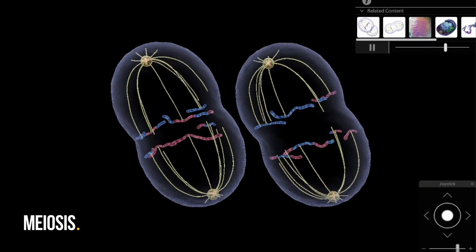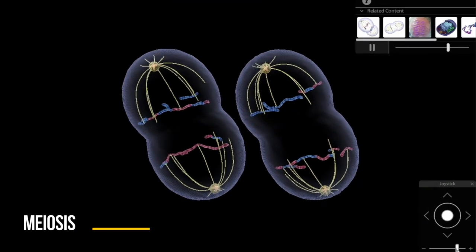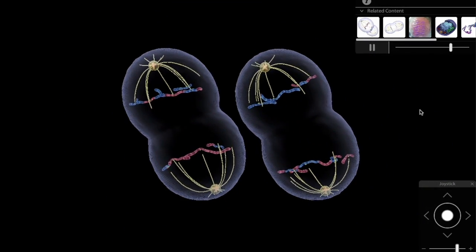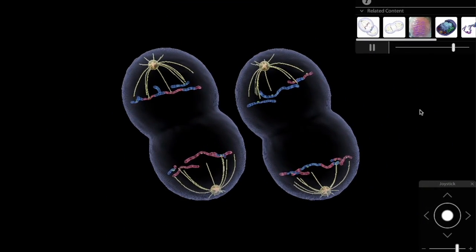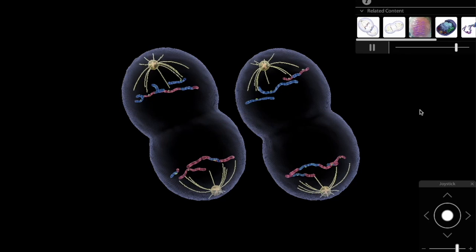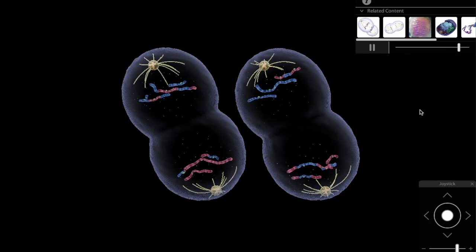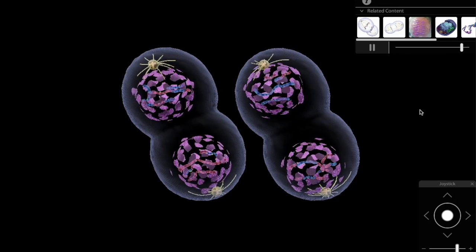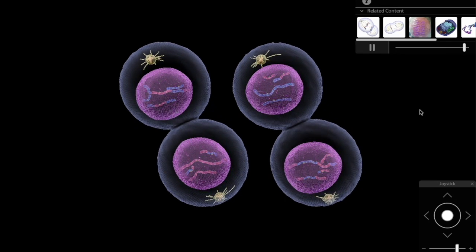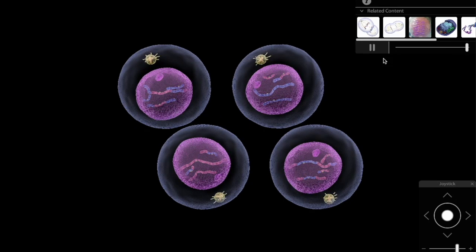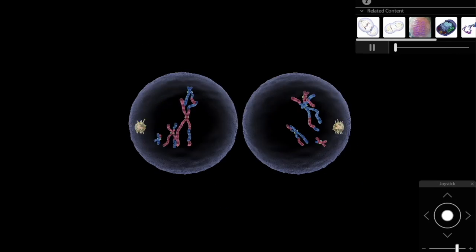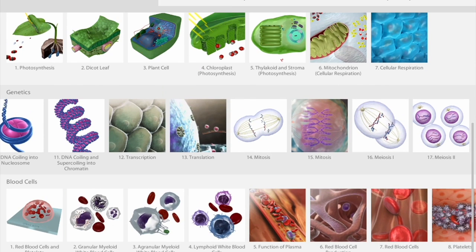Meiosis is the process by which sex cells, or gametes, are formed. Meiosis has two rounds of cell division, meiosis 1 and meiosis 2, which are illustrated in separate 3D simulations in Visible Biology.